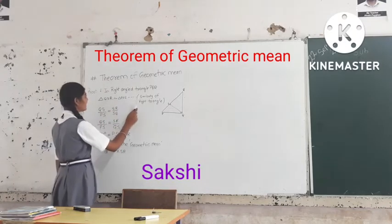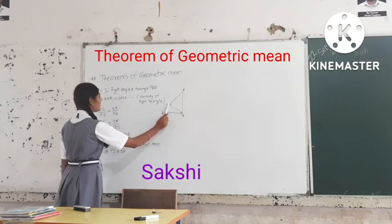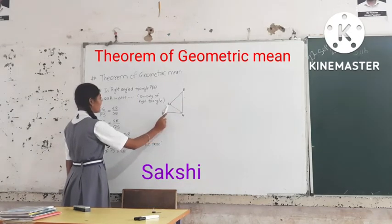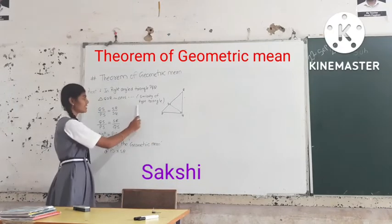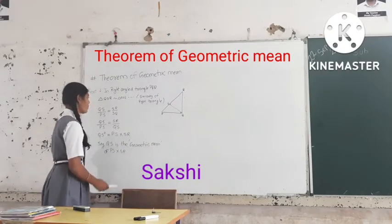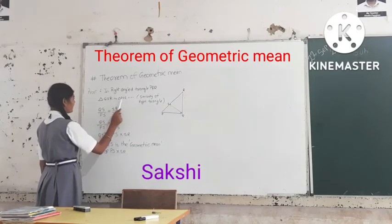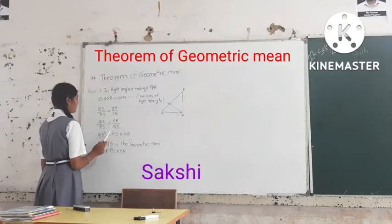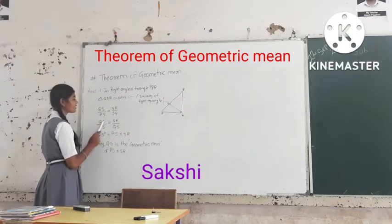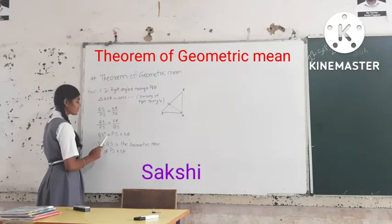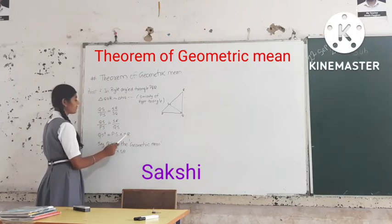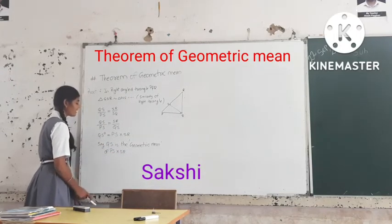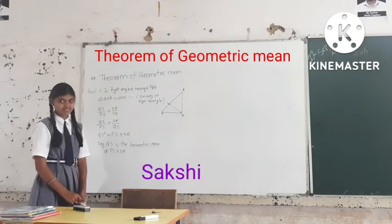In right angle triangle PQR, triangle QSR is similar to triangle QSP, because of the similarity of right angle triangles. Therefore, QS upon PS is equal to SR upon SQ. By cross multiplication, QS squared is equal to PS multiplied by SR. Thank you.